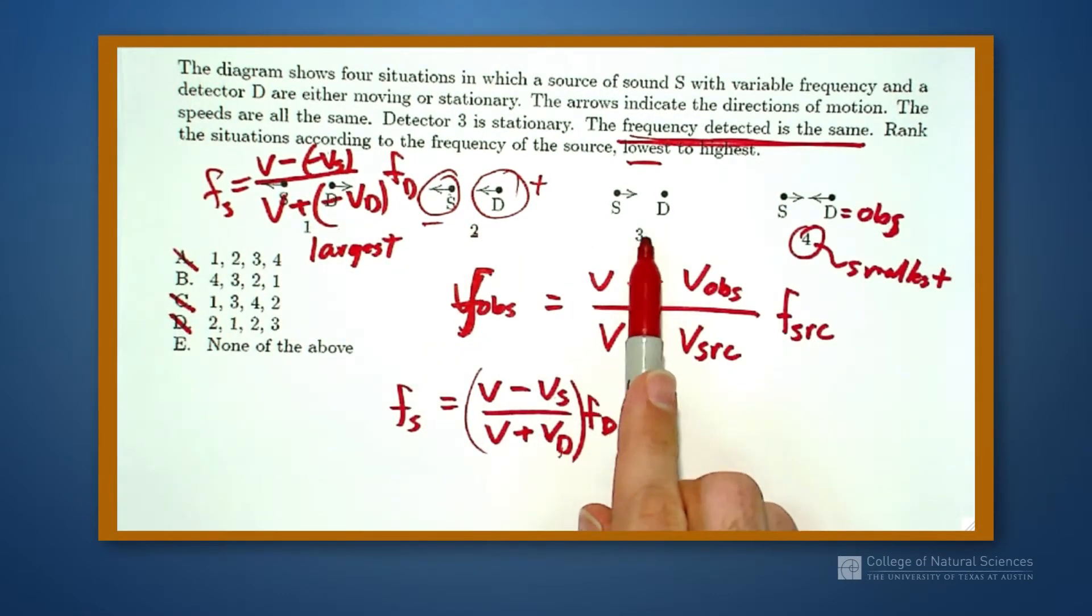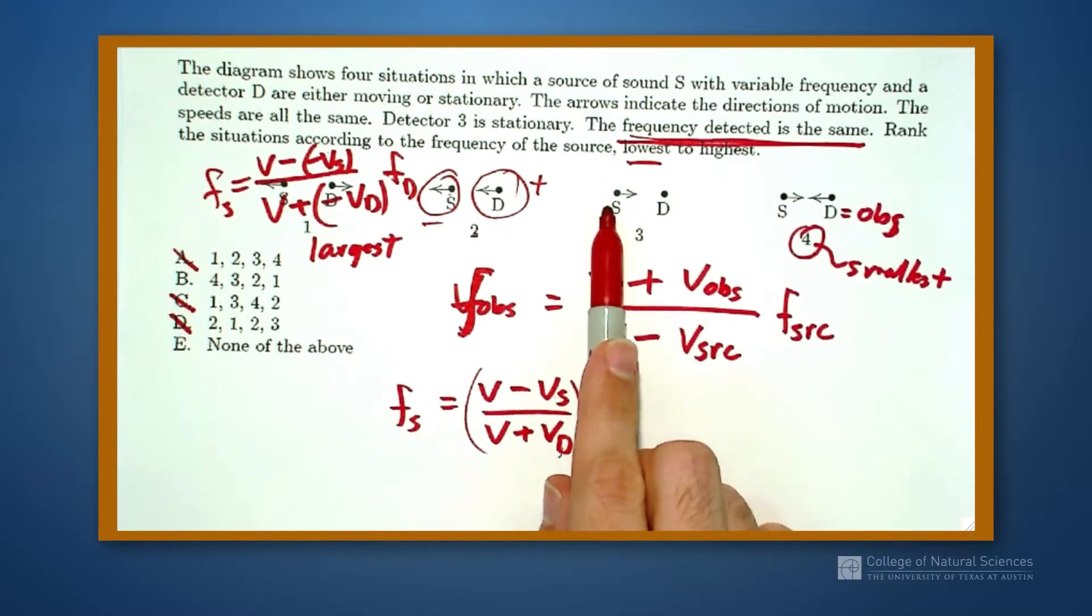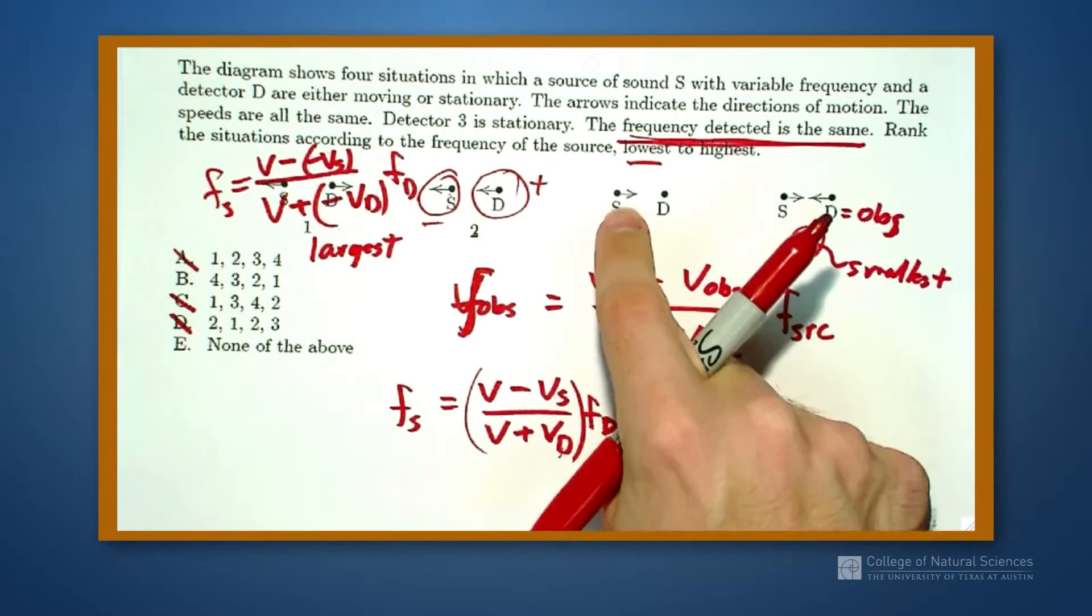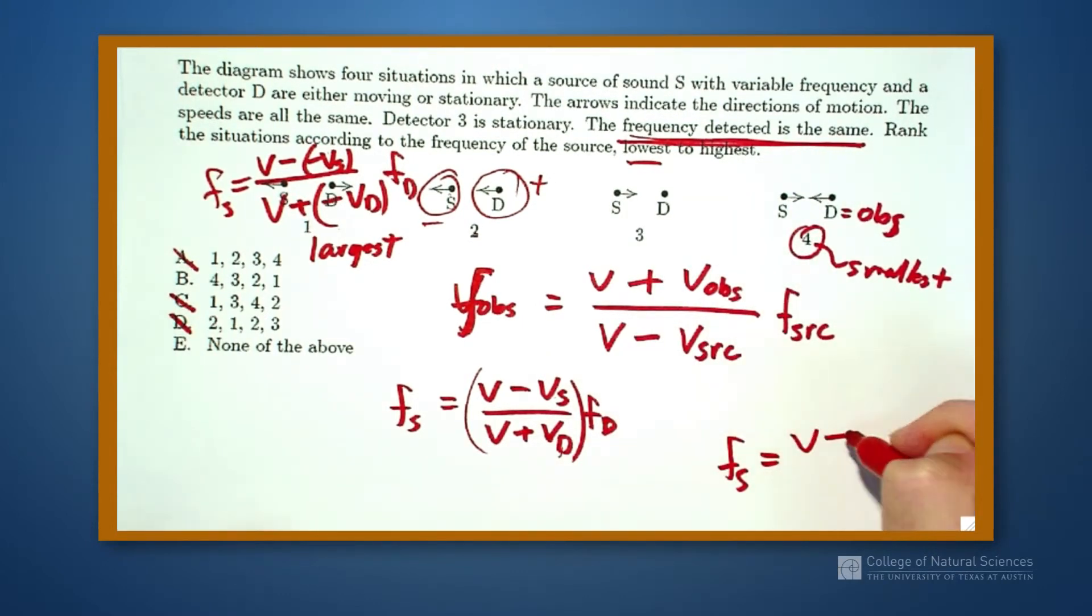However, the source, if the source is moving towards the detector, we have V minus VS over V plus VD times our original detector. Here, our detector region. Well, VS is a positive value and VD gets eliminated for case 3.